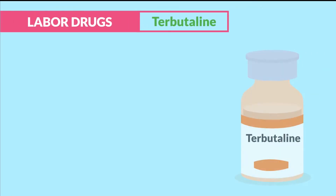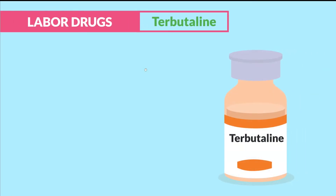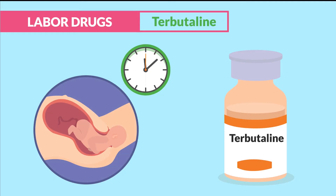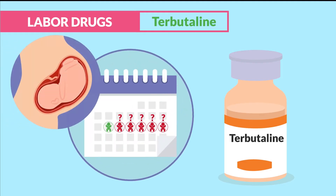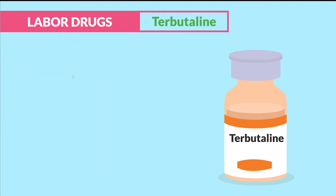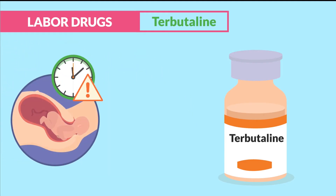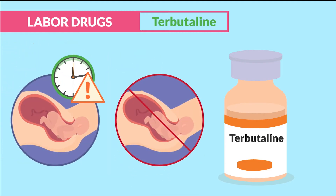Alright guys, let's begin! Now for labor drugs, we have Terbutaline. This one's given to delay labor for a baby coming out too soon, or in fancier terms, clients who are going through pre-term labor. This drug helps to slow down and prevent the labor.